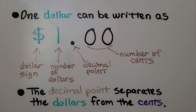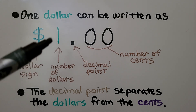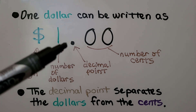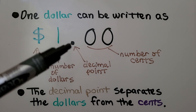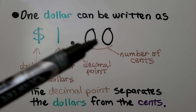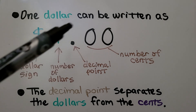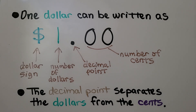$1 can be written as a dollar sign. We write a one — that's the number of dollars. Then we've got a decimal point, and then we've got the number of cents. So $1 has no cents; it would be zero, zero where the cents are. This decimal point separates the dollars from the cents — it goes right in between them.